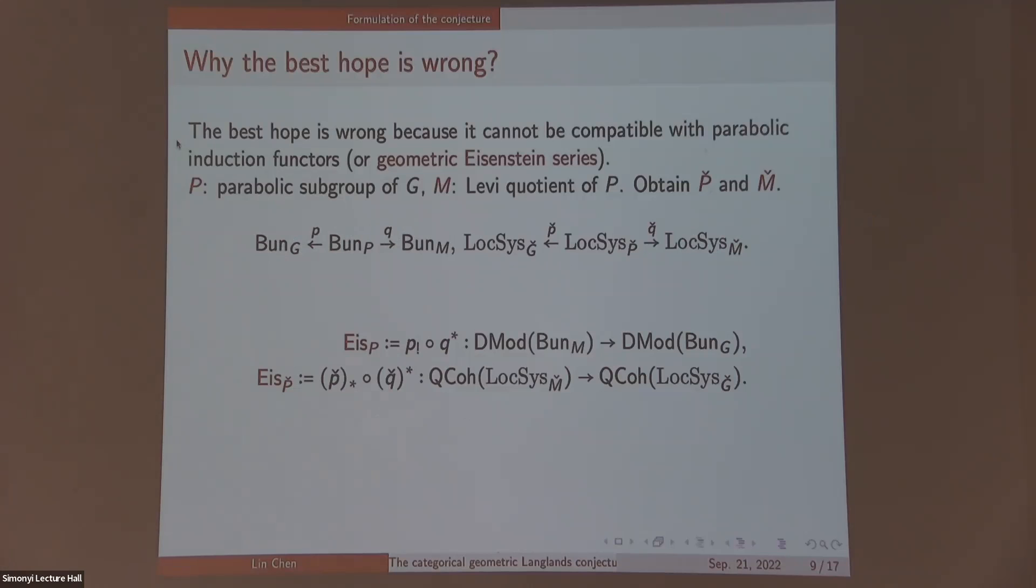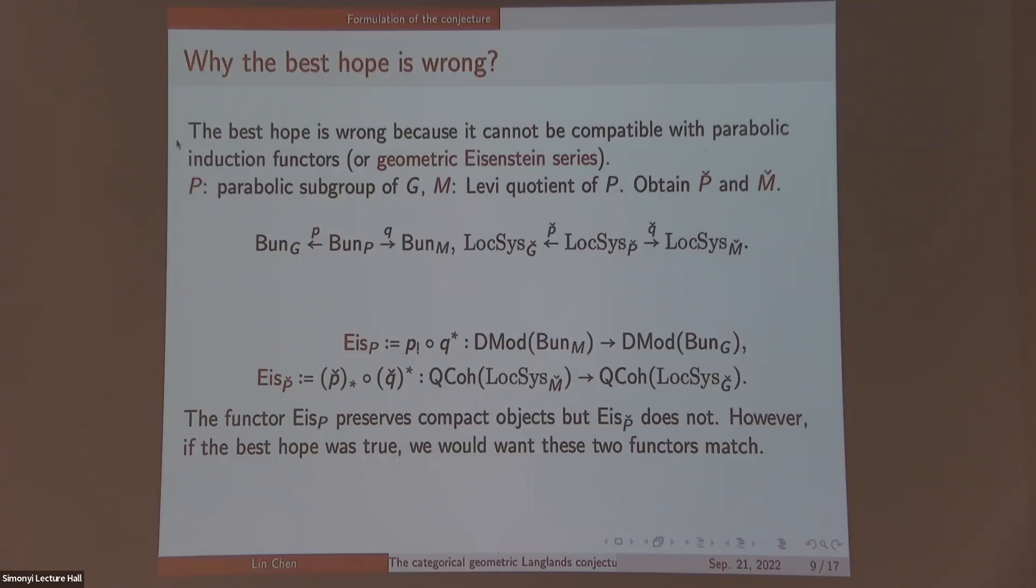There are many evidences that if these two categories are equivalent, we would expect these two functors to match each other. However, they cannot match each other because the first functor preserves compact objects, but the second does not. The second does not because the pushforward functor does not preserve compact objects. Compact objects in these categories are perfect complexes of quasi-coherent sheaves. Here I'm secretly turning to derived categories because we have to do so.